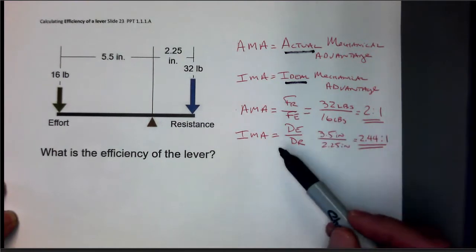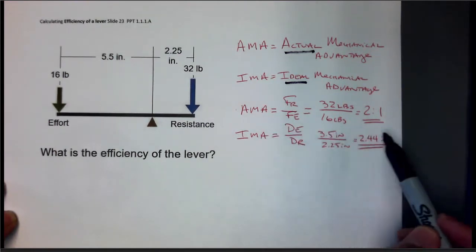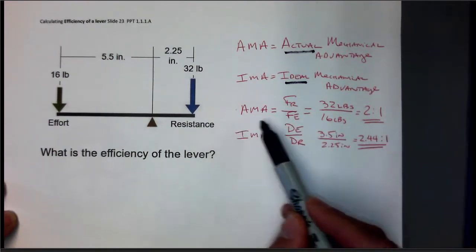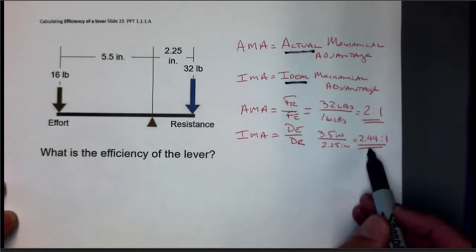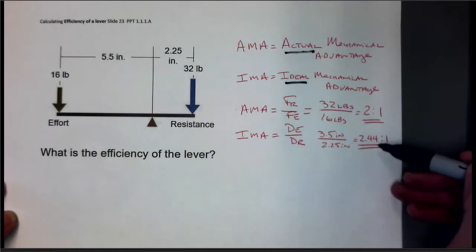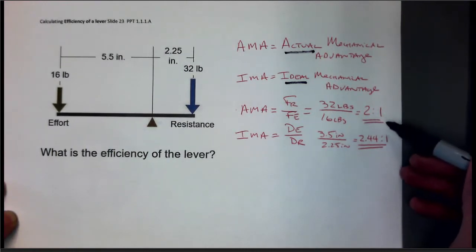And to calculate those, we use this equation. We come up with this answer for actual mechanical advantage and IMA, the ideal mechanical advantage, is this. So we've got 2.44 to 1 and 2 to 1.